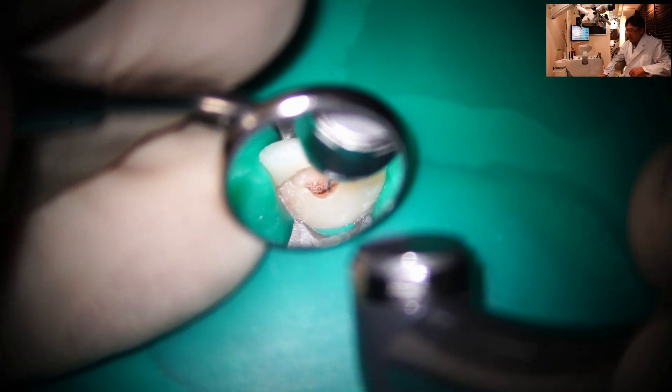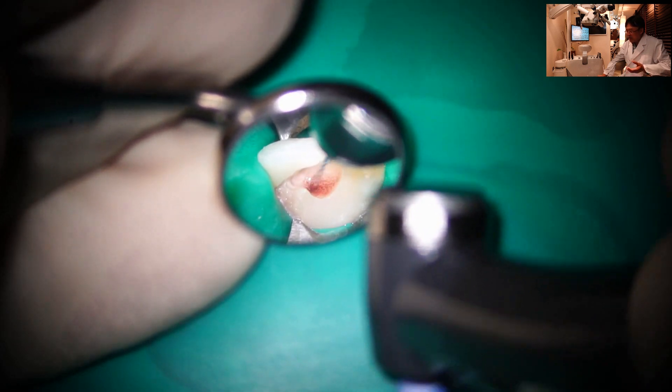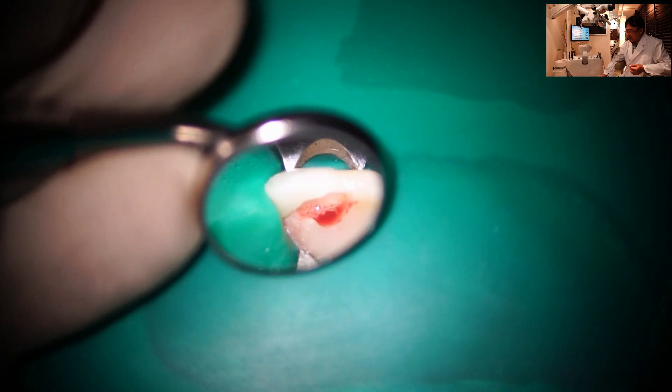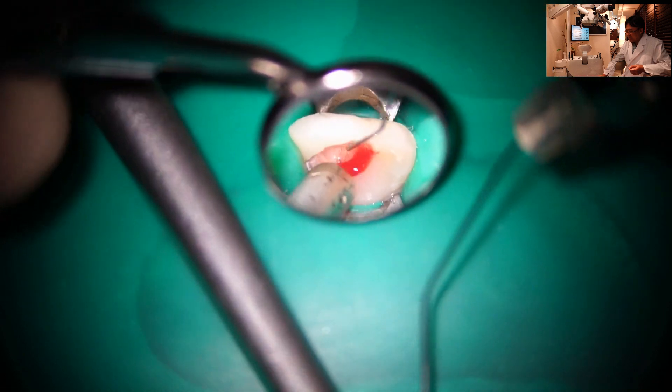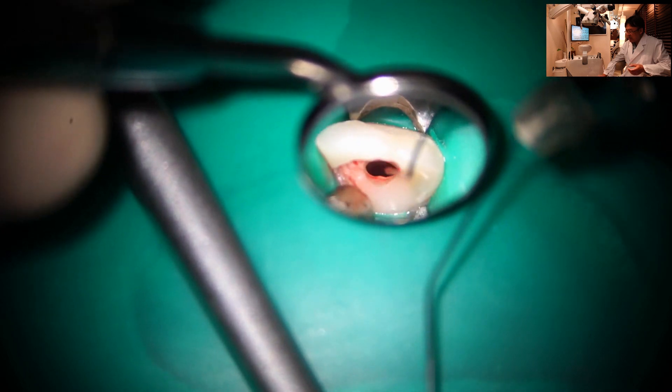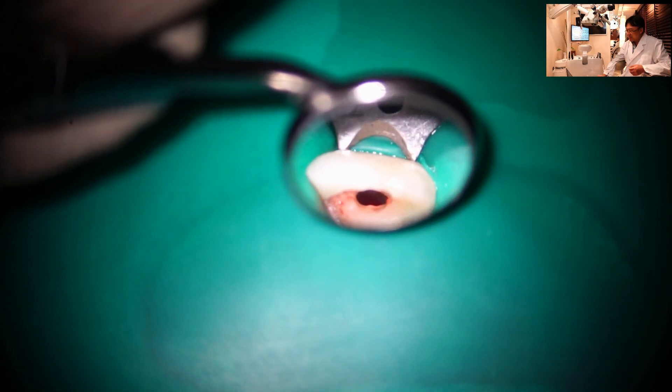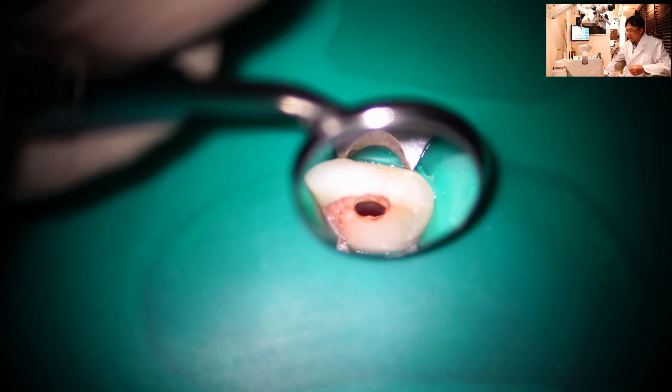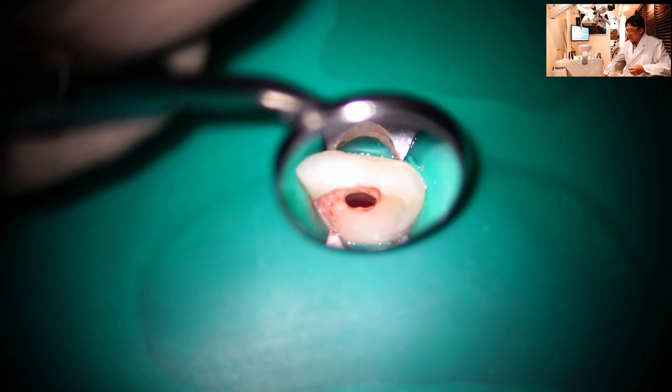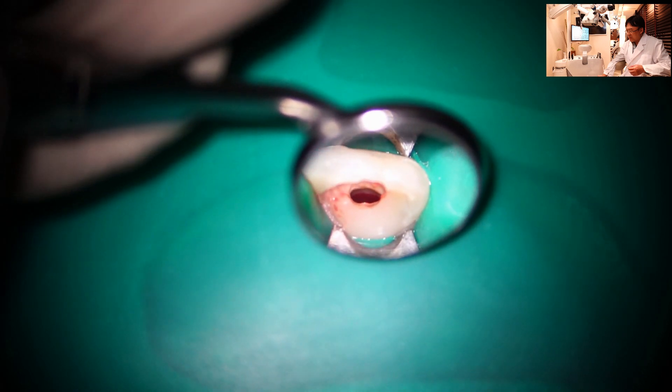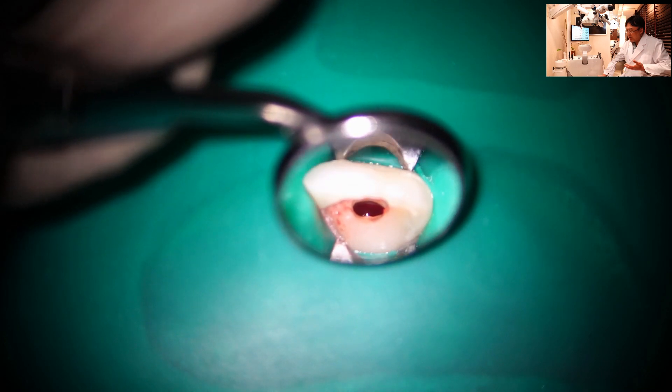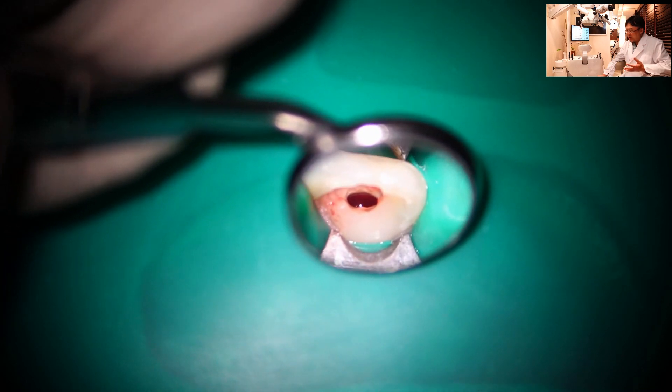So now it's bleeding. I'm drying the canal with a suction irrigator. Then the bleeding is coming up to the CEJ junction.